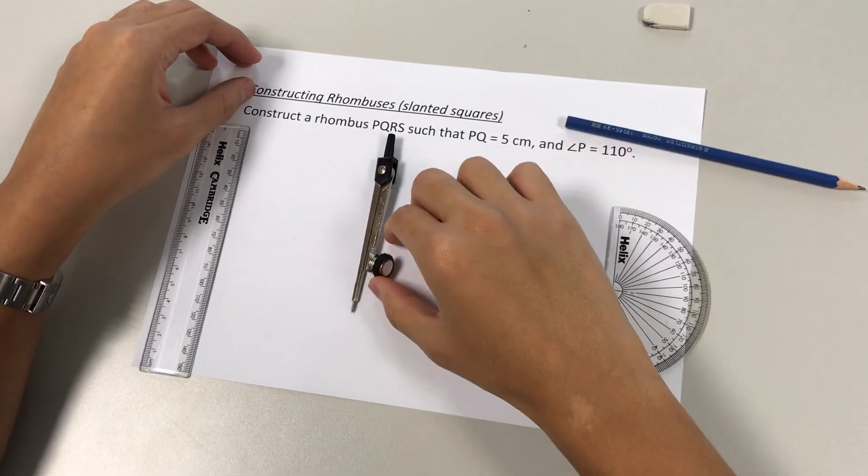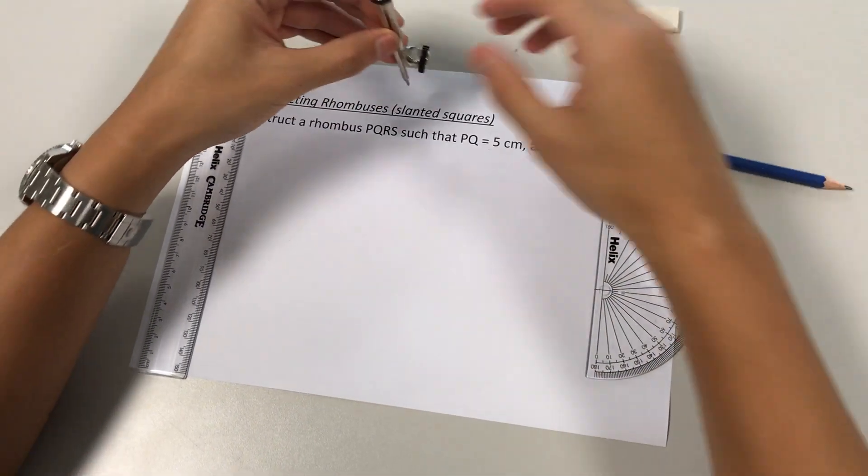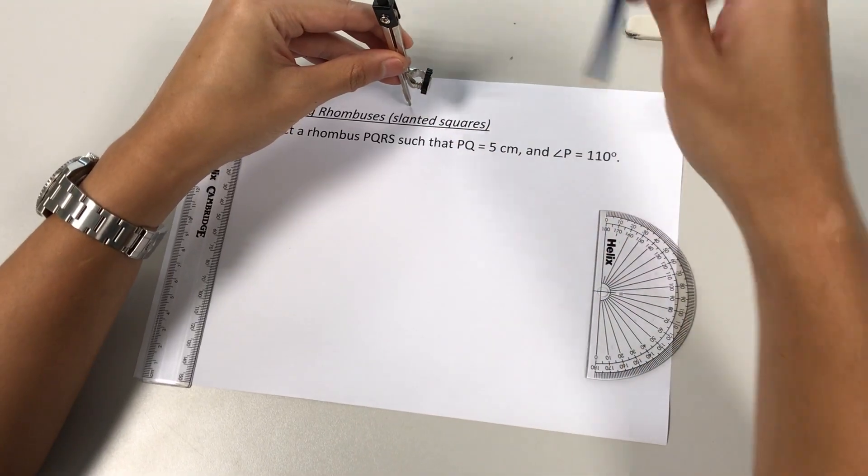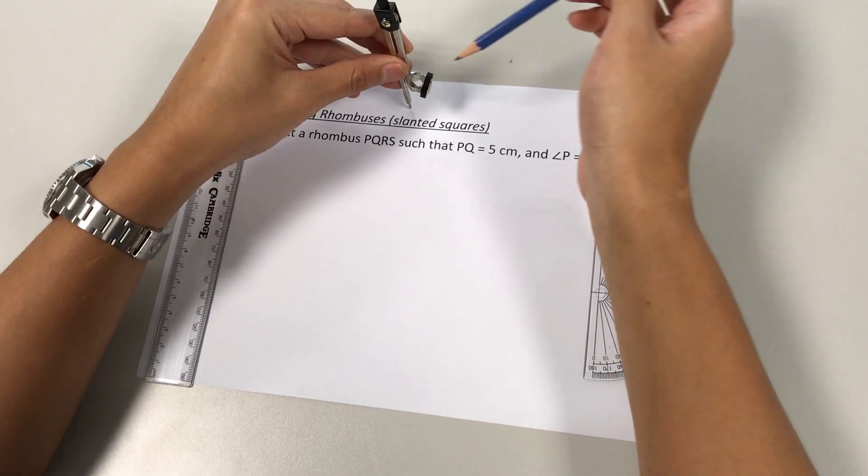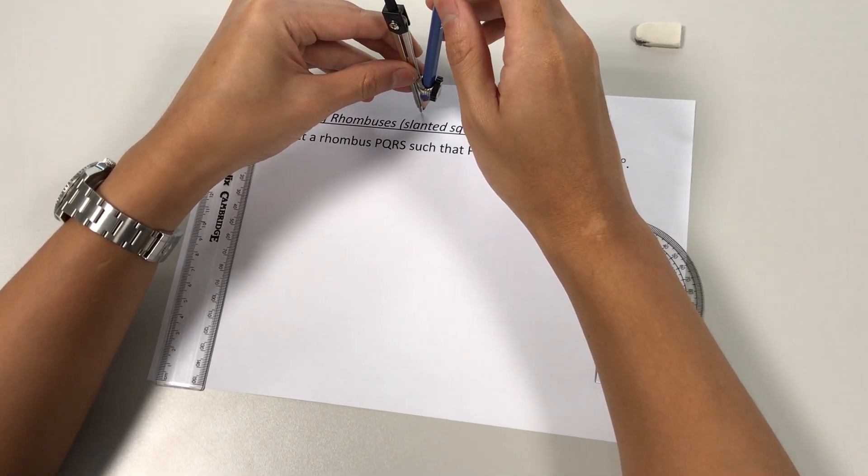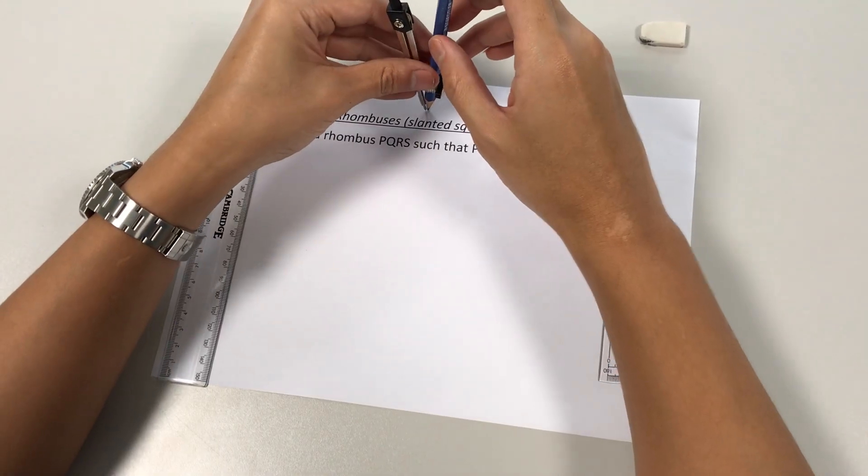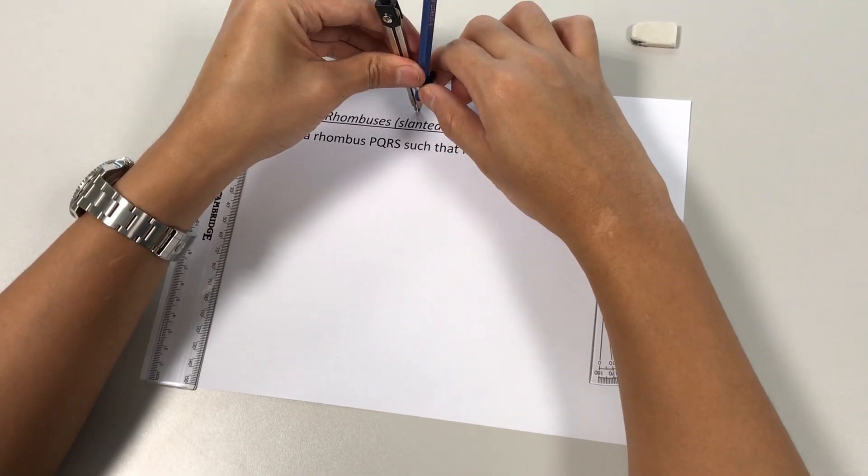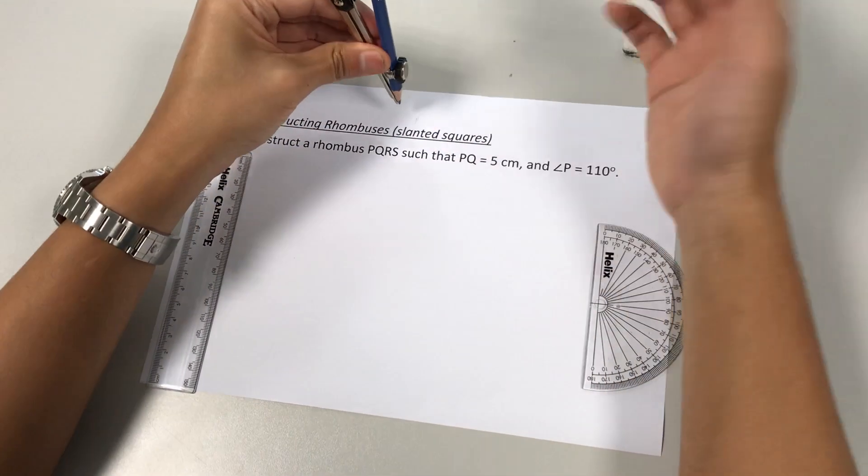Once again, we shall start with how to set our compass. First, we put our compass on a level ground. Then we put our pencil through. Then we tighten the nut. Okay, and we're good to go.